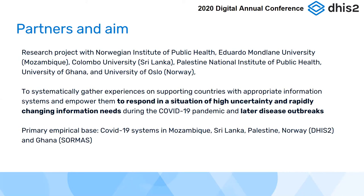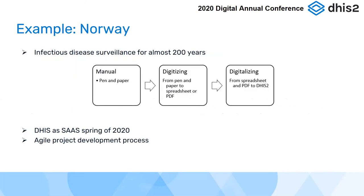DHIS2 is used for COVID-19 systems in four of the partner countries — Mozambique, Sri Lanka, Palestine, and Norway. Ghana is also a partner where we can evaluate another technology, SORMAS. The primary empirical base is activities ongoing in these countries, and we will also draw on learnings from the wider community of DHIS2-using countries.